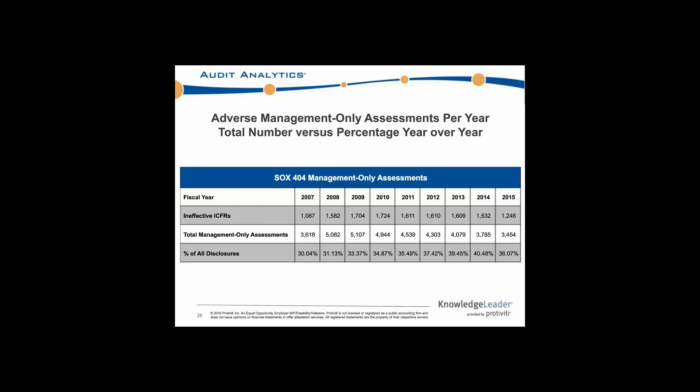Right here you can see the ineffective management-only ICFRs mirrored up against the total management-only assessments. Even though the number dropped from 2013 to 2014 in terms of the total, it was a fairly substantial drop-off — almost about 10% from 2013 to 2014, then another drop from 2014 to 2015. There were 5,100 management-only assessments in 2009, and we're all the way down to just over 3,400 of them in 2015. While the number of companies with ineffective management-only ICFRs has stayed pretty steady from 2010 through 2014, the total number of companies is dropping, ultimately causing that increase in population percentage.